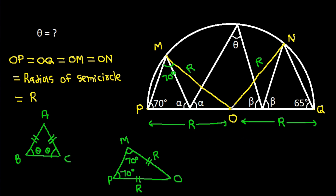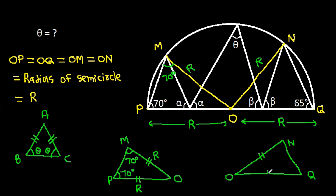And in triangle ONQ, we have ON equal to OQ, both equal to R, and this angle is 65 degrees. So this angle will also be 65 degrees.